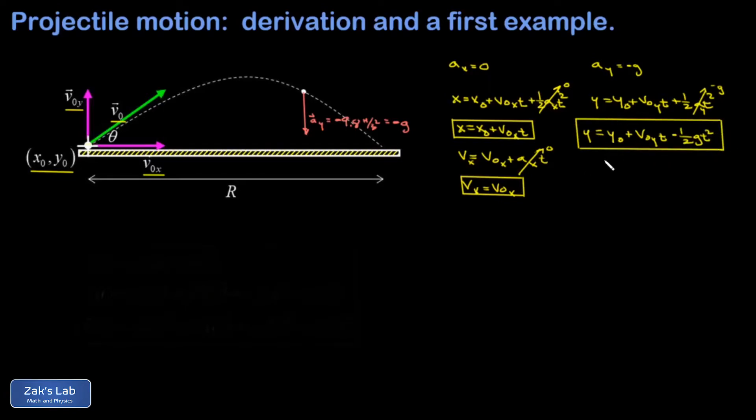And then I look at my second standard kinematics formula. v_y equals the initial y velocity plus the y acceleration times time. And again, we sub in a negative g for the y acceleration.